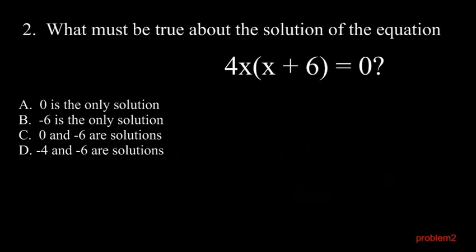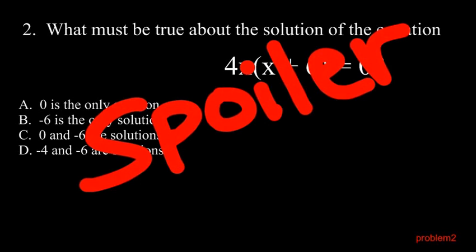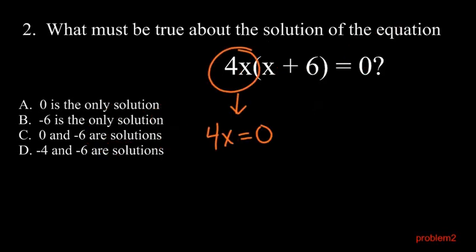Problem two. What must be true about the solution of the equation? 4x times quantity x plus six equals zero. Give me a second. Okay. Spoiler. Well, it's possible. The first thing, 4x equals zero. If you solve for x, divide four on both sides, you figure out x could equal zero.